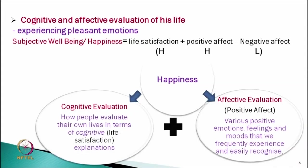Next, scholars expanded this model. They said cognitive and affective evaluation of life is happiness, and experiencing pleasant or positive emotions is key. There are two components: one is cognitive evaluation, that is life satisfaction, and another is affective evaluation — positive emotions and lack of negative emotions. The total model is: if we have a high score on life satisfaction and positive affect, and a low score on negative affect, then that is our high level of happiness.